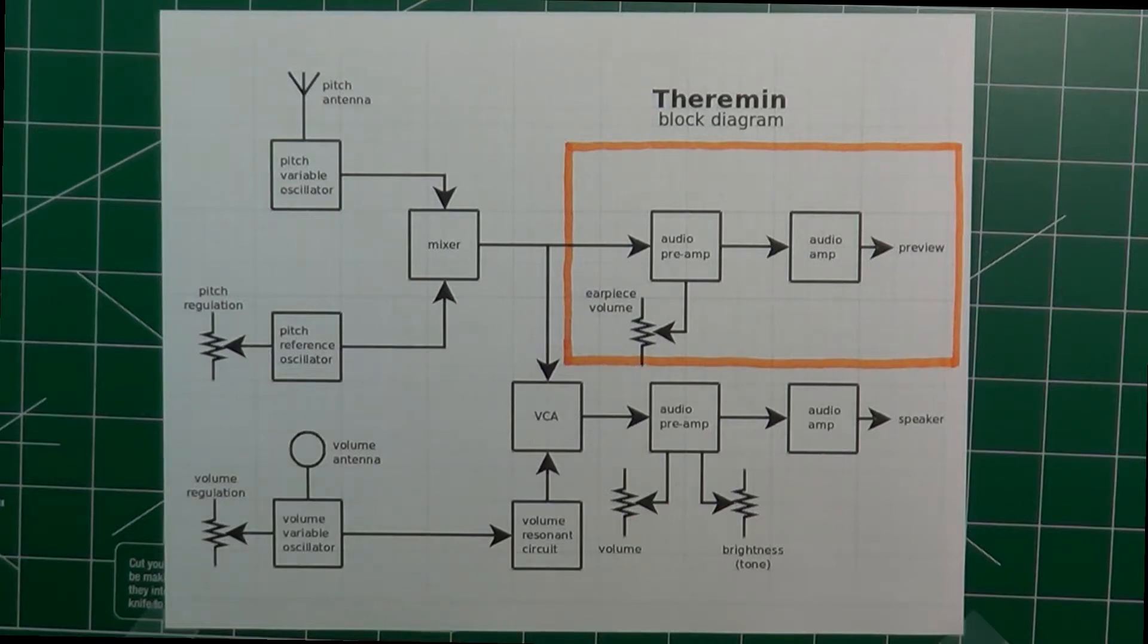The output of the VCA is then sent through the input of an audio preamp, which allows to change the final volume of the signal and its brightness or tone. The output of the preamp goes to the input of the power amp that pilots the loudspeaker.